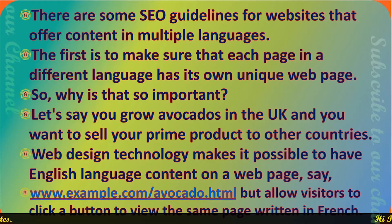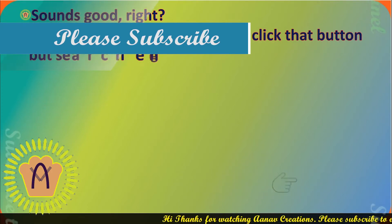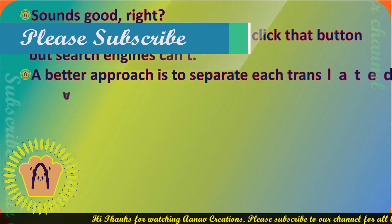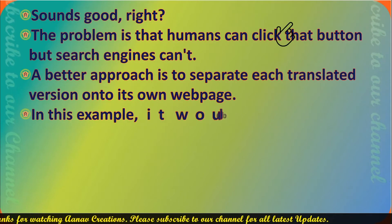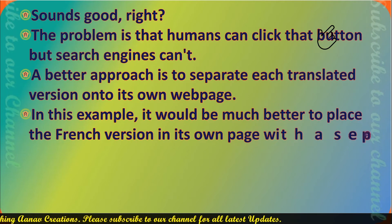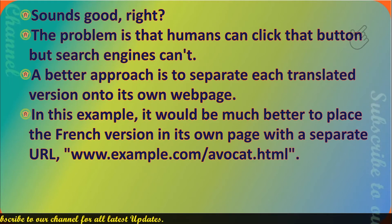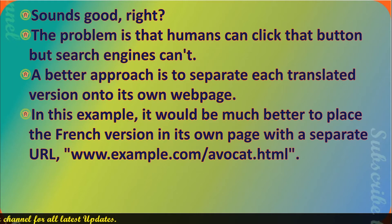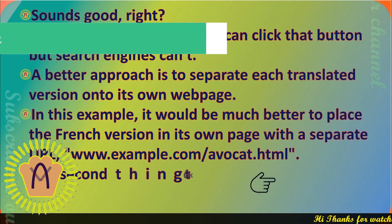But it also allows a visitor to click a button to view the same page written in French. Sounds good, right? The problem is that humans can click that button but search engines can't. The better approach is to separate each translated version onto its own web page. It would be much better to place the French version on its own page with a separate URL, like www.example.com/avocado-fr.html.